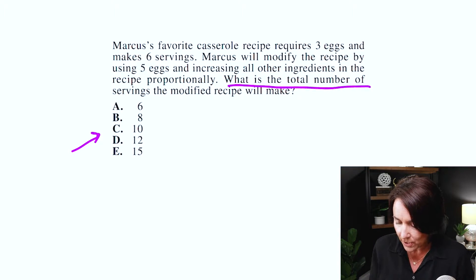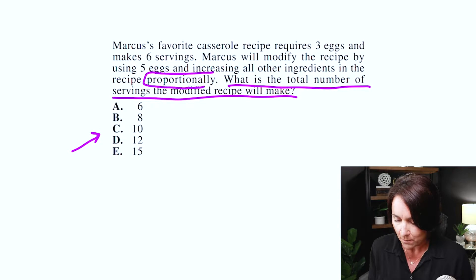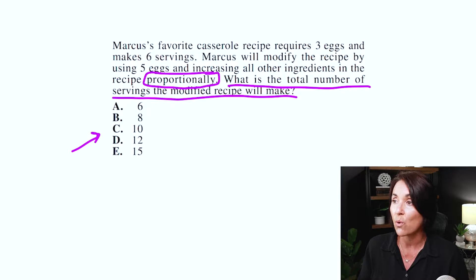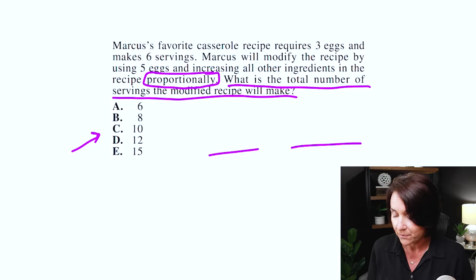In this case we do have standard numbers, so it looks like I need to come up with a solution. The question asks: what is the total number of servings the modified recipe will make? I see the word 'proportionally' — proportions. So we know we're probably going to have to set up a proportion for this particular problem. Now let's go up to the top and read: Marcus's favorite casserole recipe requires three eggs and makes six servings. Marcus will modify the recipe by using five eggs, increasing all other ingredients proportionally. What is the total number of servings the modified recipe will make?